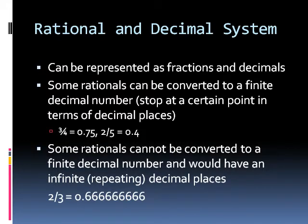So now let's look at what is the rational and the decimal system. So rational can be represented as fractions and decimals. Some rationals can be converted to finite decimal numbers. And what that means is it will stop at a certain point in terms of decimal places. So let's say three quarters, so three fourths. When you convert it to decimal 0.75. If you look at the fraction two fifths, if you divide the two by five, you would get 0.4, which is a finite decimal number.